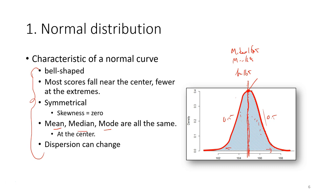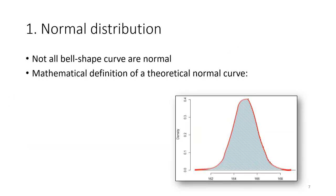Regardless of what type of data you collect, as long as it is scale data and a large amount of data, more likely when you plot the distribution curve you will get a normal curve with these characteristics. However, not all bell shapes are normal. There is a mathematical definition of the theoretical normal curve — a formula that defines this curve — and this is that formula.